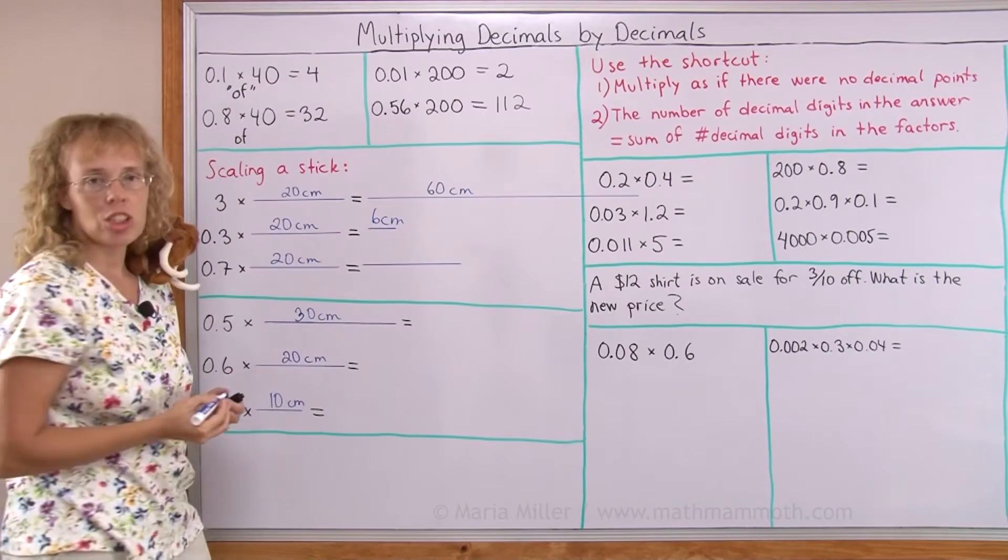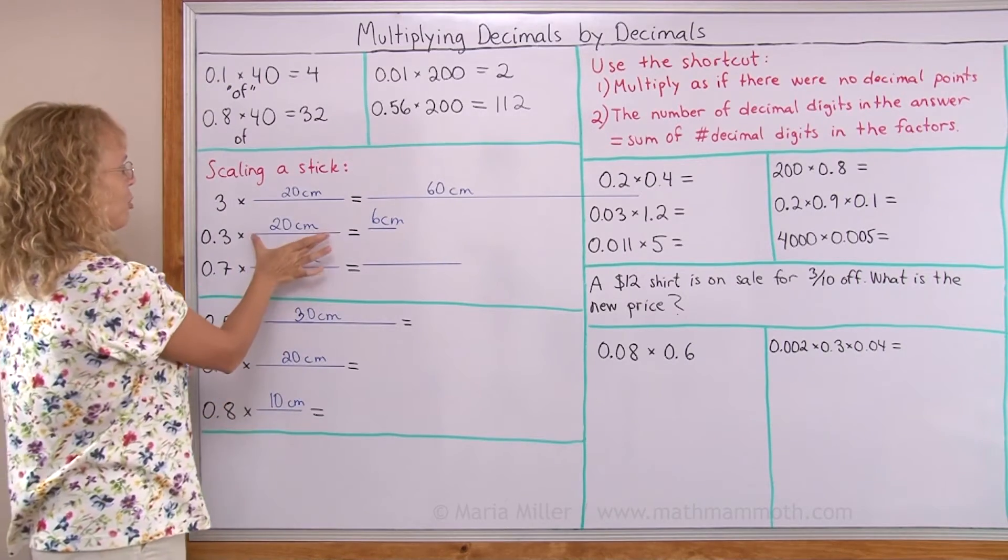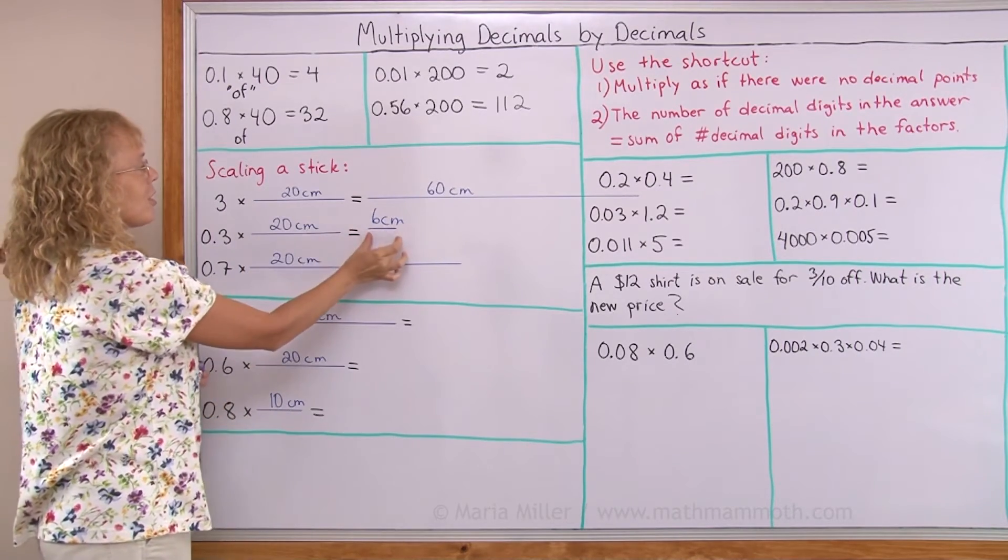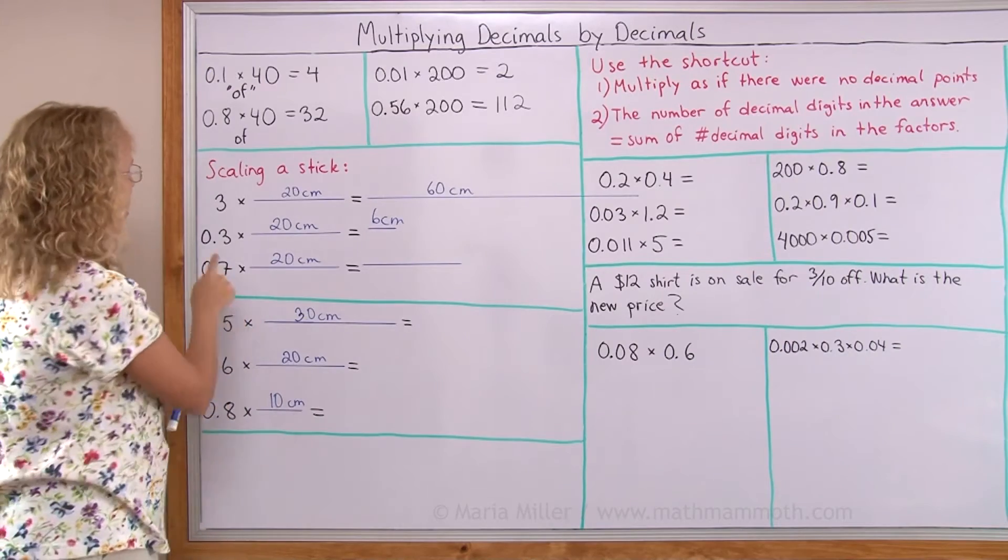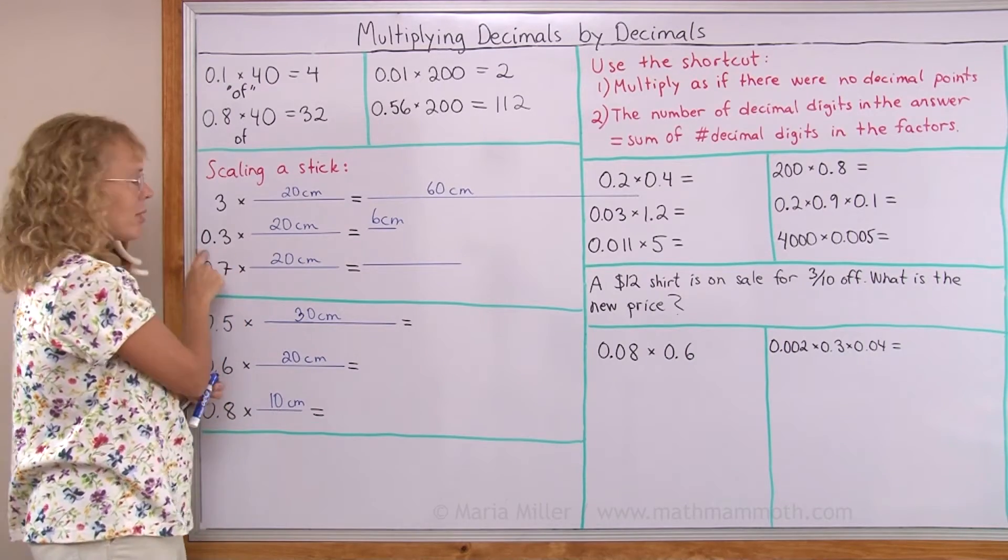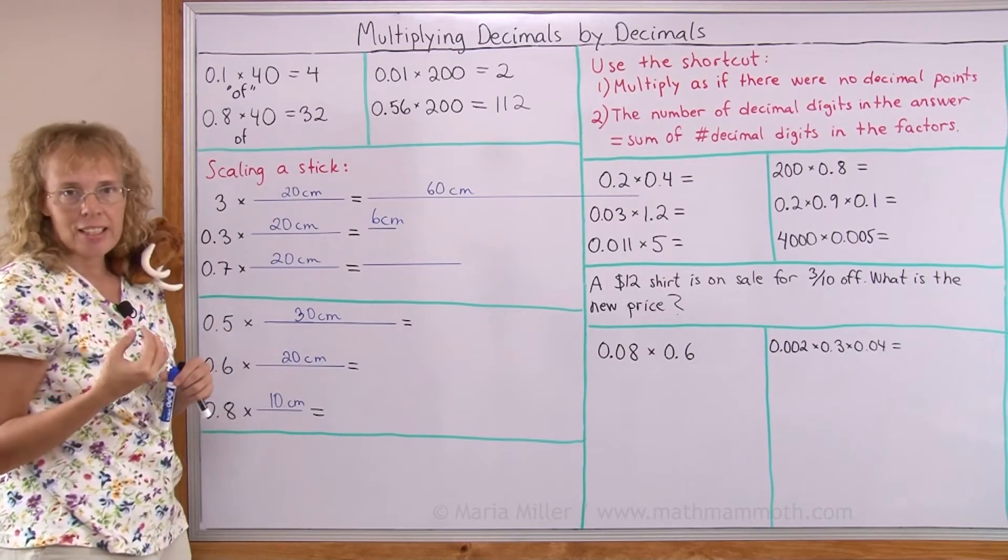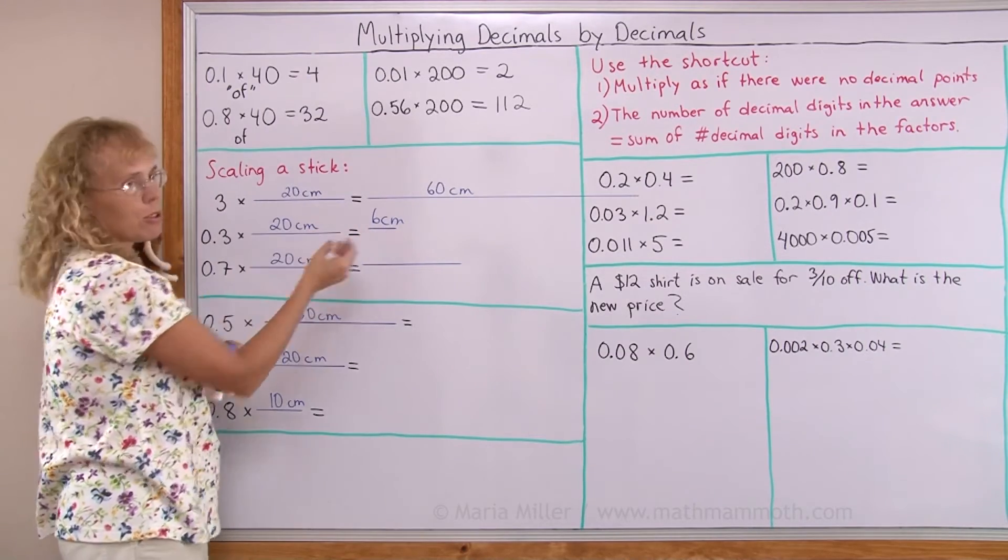And notice the stick got shorter. Way shorter. It used to be 20 centimeters. It got shorter. Just 6 centimeters. If you multiply by a number that is less than 1, and you are thinking of scaling, then your thing will get shorter or smaller.